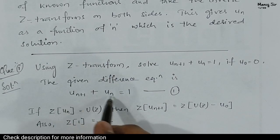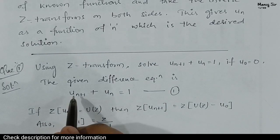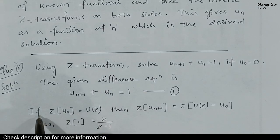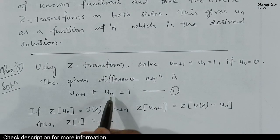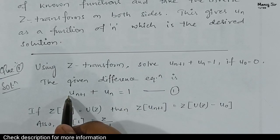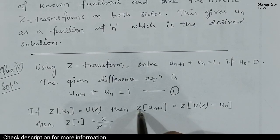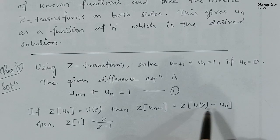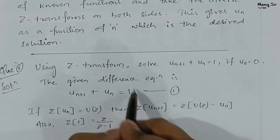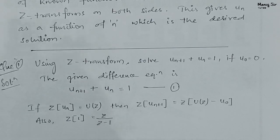Since we have UN+1 + UN = 1, if we take the Z transform we need to know the formula for Z transform of UN+1, Z transform of UN, and Z transform of 1. If Z transform of UN = U(Z), then by the shifting property, Z transform of UN+1 = Z·U(Z) − Z·U(0). Also, Z transform of 1 is Z/(Z−1). This is a very simple formula.